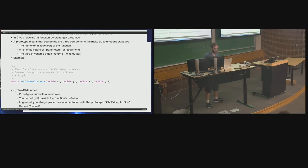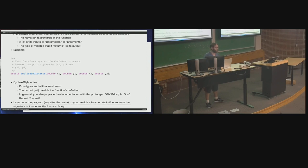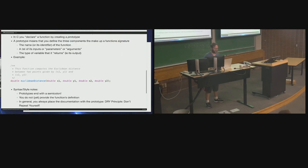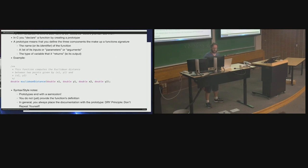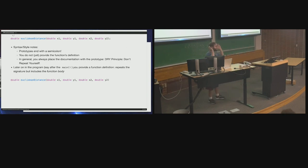Later on in the program — say after the main — you provide a function definition. It repeats the signature but includes the function body, and does not include the documentation, because again: DRY, don't repeat yourself. So instead of a semicolon, you have an opening curly bracket and a closing curly bracket, and this is where you put the code for the function. We're given x1, y1, x2, and y2 — given these four things, we need to compute the Euclidean distance.